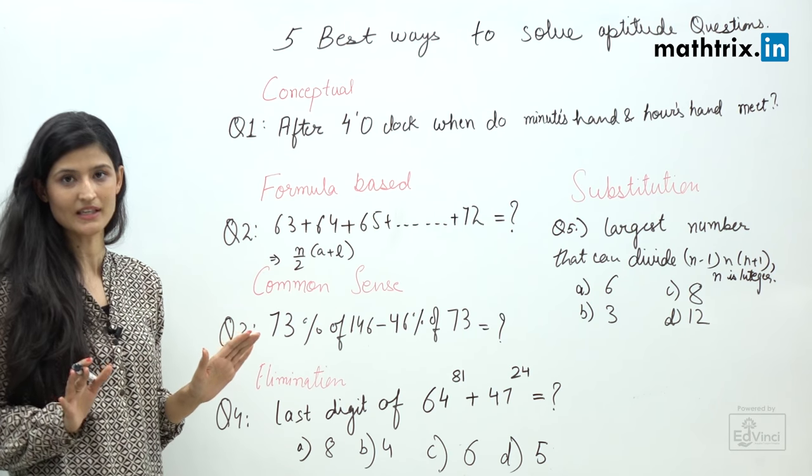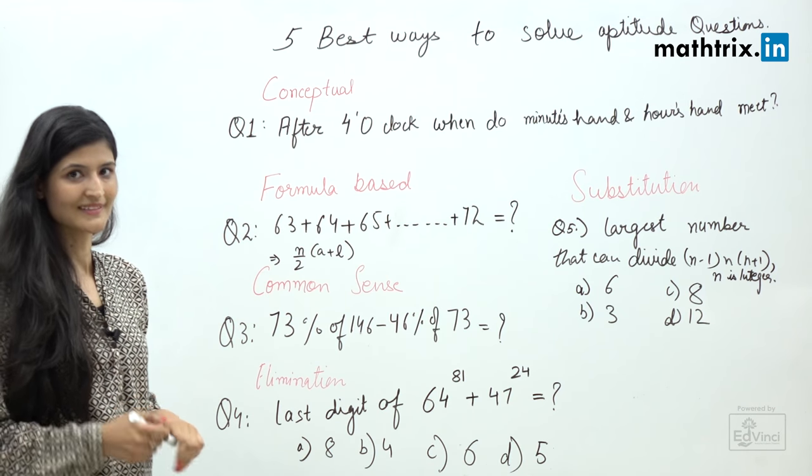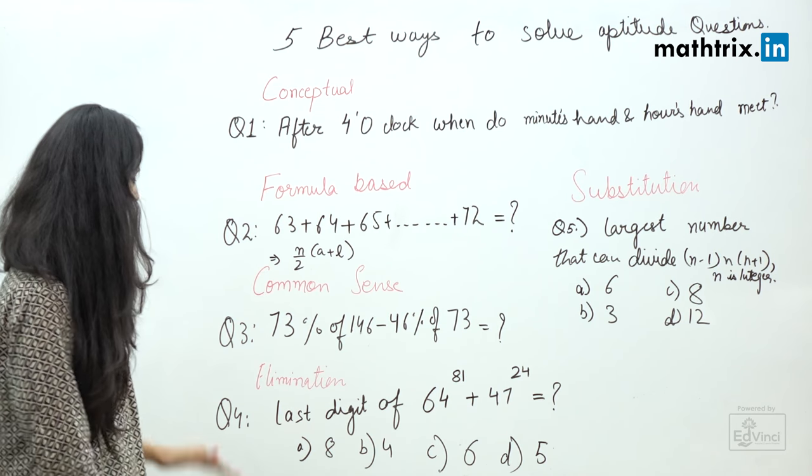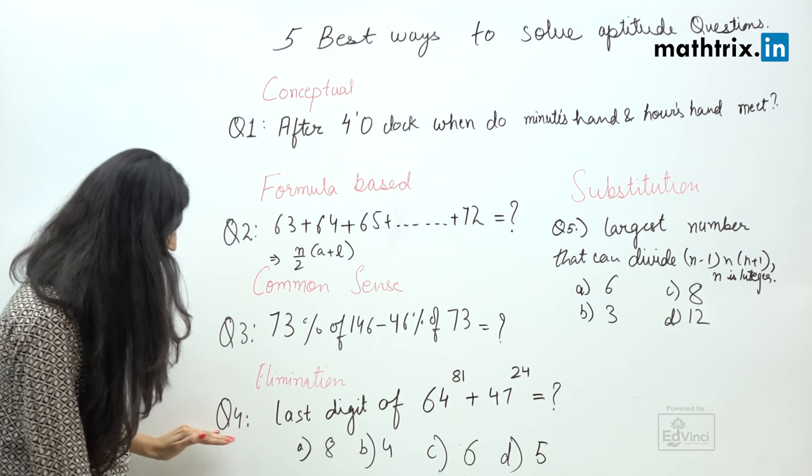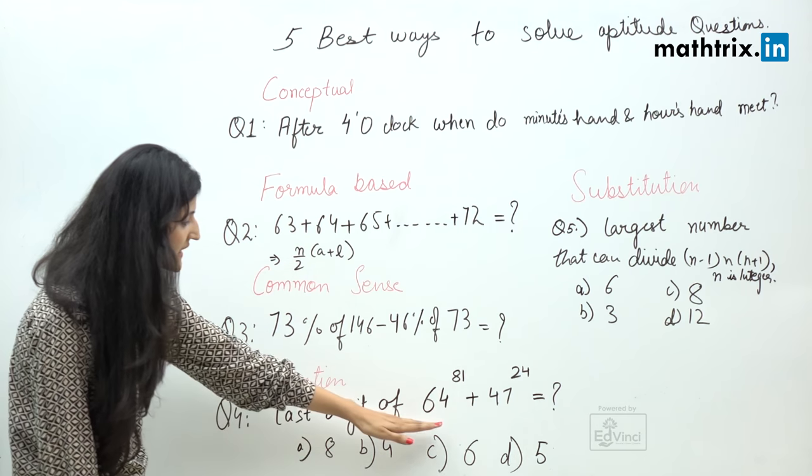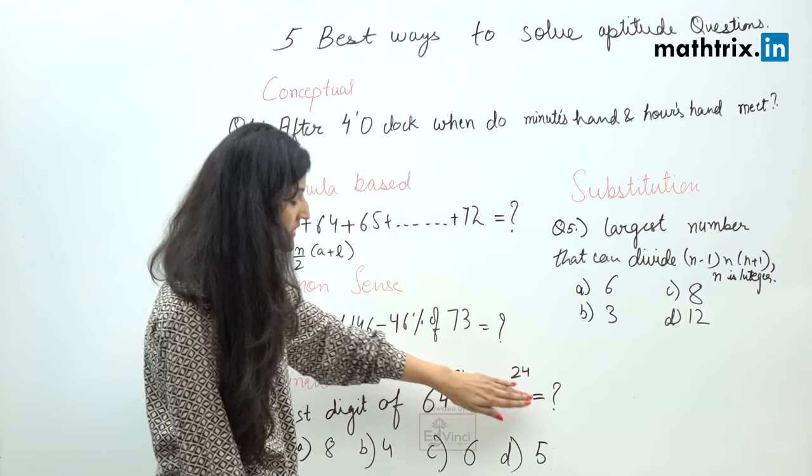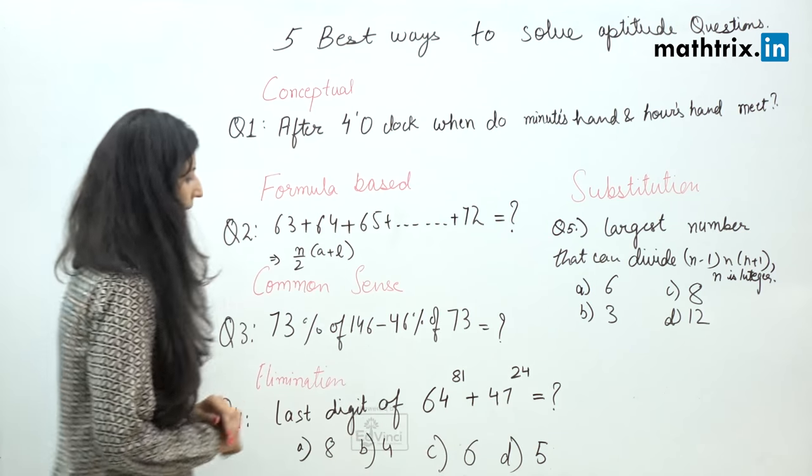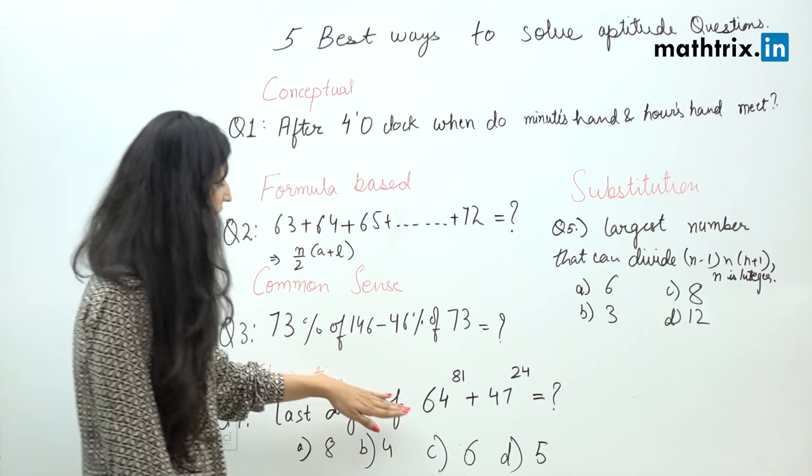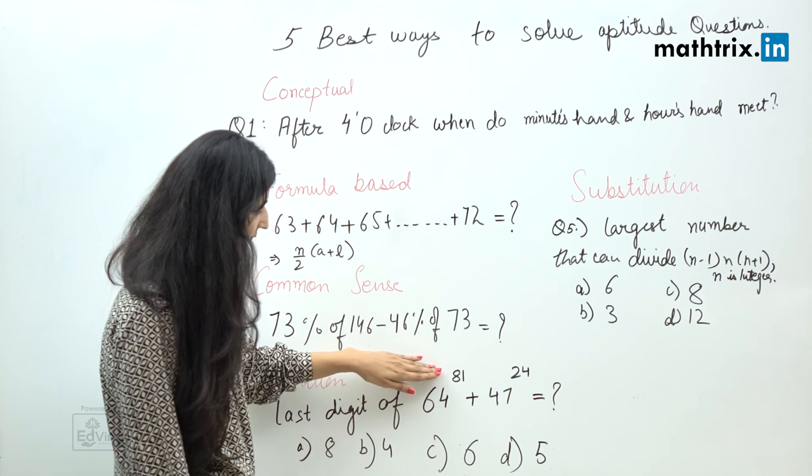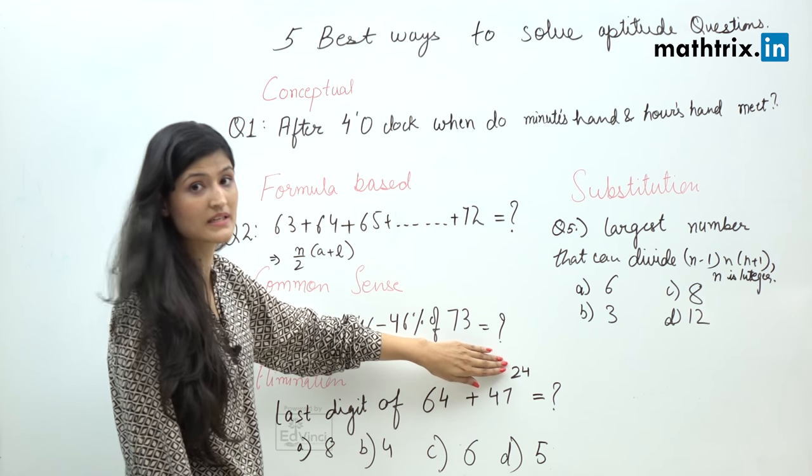Moving on to the next approach, which is elimination approach. In this, I have one question for you: last digit of 64 raised to the power 81 plus 47 raised to the power 24 equals what? It looks very difficult, but it's very simple, because we know 64 raised to the power 81 is nothing but an even number, and 47 raised to the power 24 is nothing but an odd number.